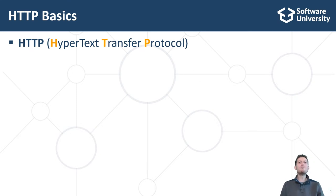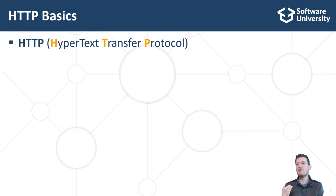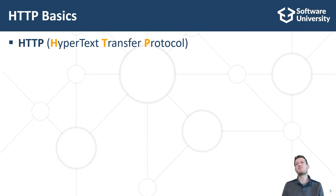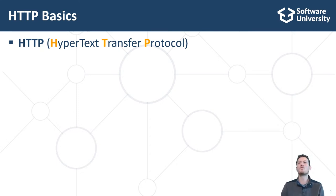HTTP is the main internet protocol used to communicate between web servers, which host the websites and server-side software components, and web clients such as web browsers and mobile apps, which display the information to the users and interact with them. HTTP comes from Hypertext Transfer Protocol. It's a protocol originally created for transferring HTML, CSS, images and other web resources within the global distributed information system called the World Wide Web, or just the web.